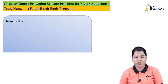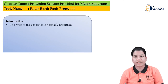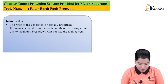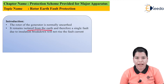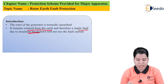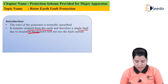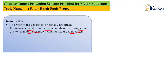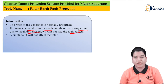First, let us study the introduction. Basically, the rotor of the generator is not connected to earth — that is, it is unearthed. Therefore, it remains isolated from the earth, and a single fault due to insulation breakdown will not cause a rise in fault current. So, if one fault occurs due to breakdown of insulation, it will not be considered as a rise in fault current because the rotor is not earthed. A single fault will not affect the operation of the rotor.